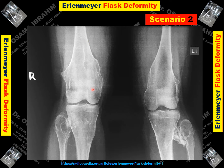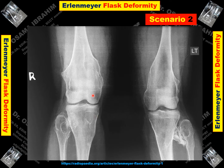Scenario two: this abnormality on the frontal radiograph of both knees shows broadening and flaring of the metaphysis of both femora and also both tibia and fibula, associated with narrowing of the diaphysis, which is called Erlenmeyer flask deformity. This film is also associated with bony exostoses which appear away from the joints and have a cortex and medulla.